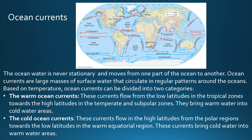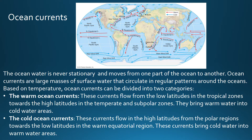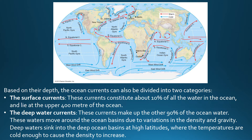Then we have the cold ocean currents. These currents flow from the high latitudes in the polar regions towards the low latitudes in the warm equatorial regions, bringing cold water into warm water areas. The blue color on the map denotes the cold ocean currents — you can see the Peru Current, the Benguela Current, the West Australian Current, the Oyashio Current, and the Labrador Current, all flowing from the polar regions towards the lower latitudes.